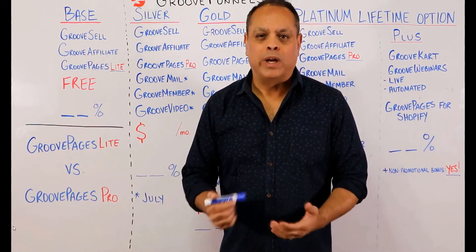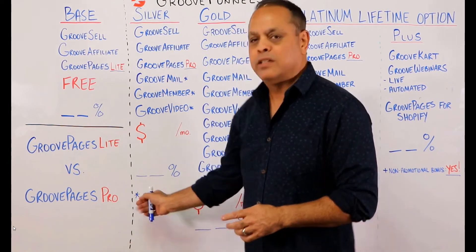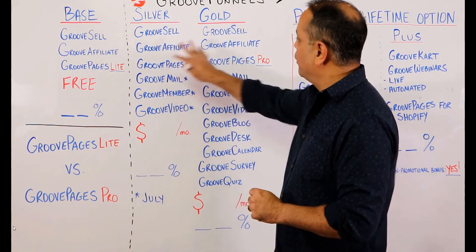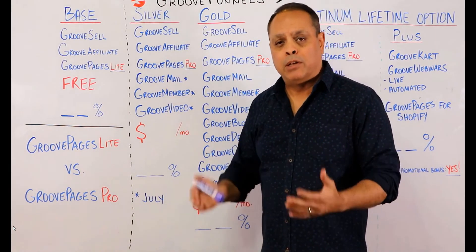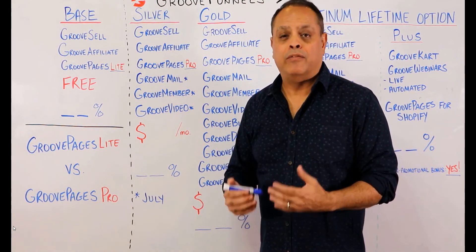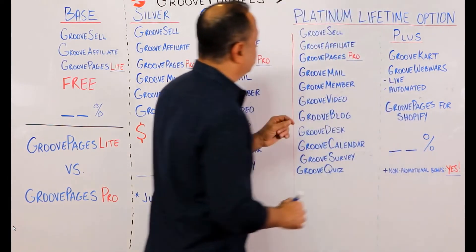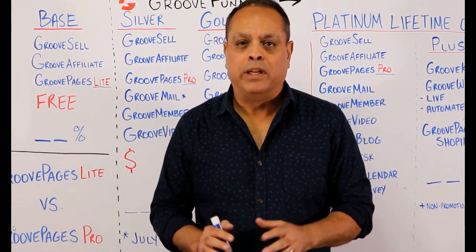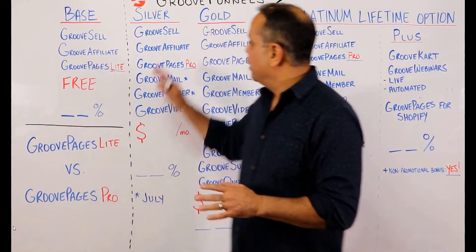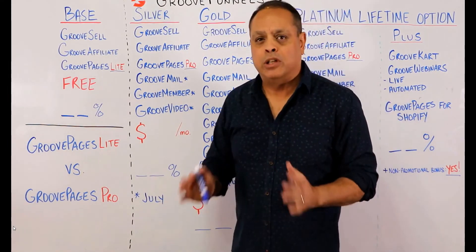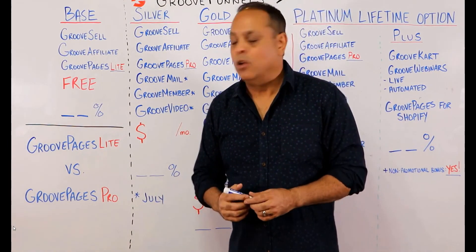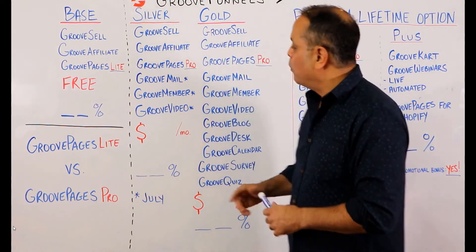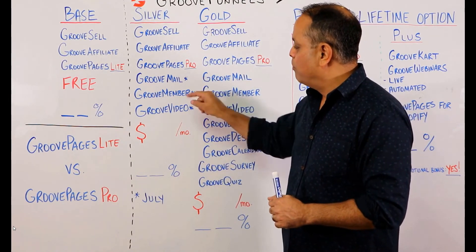So what is GrooveFunnels? Everything past this dotted line is GrooveFunnels. We have three plans — silver and gold will be monthly plans going live sometime in July of this year. Right now, the only option available is the lifetime platinum option. The silver plan in July will include GrooveSell, GrooveAffiliate, GroovePagesPro, GrooveMail, GrooveMember, and GrooveVideo.